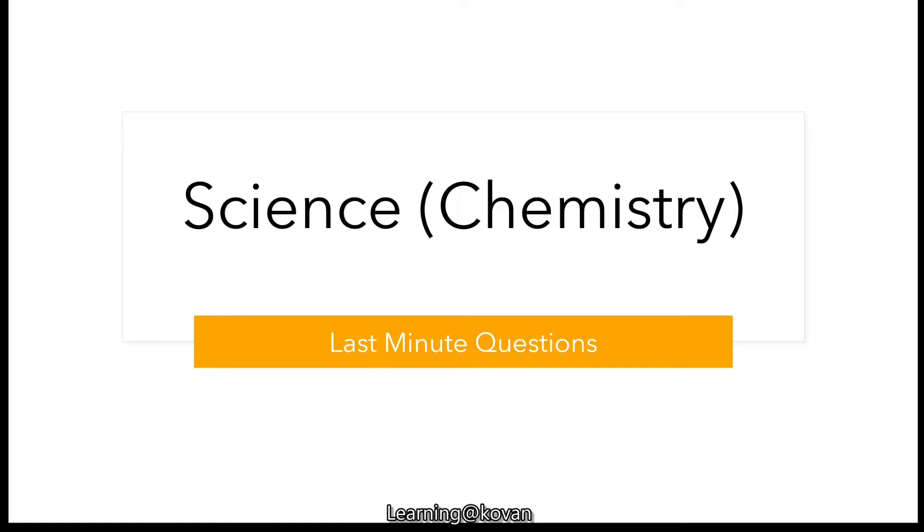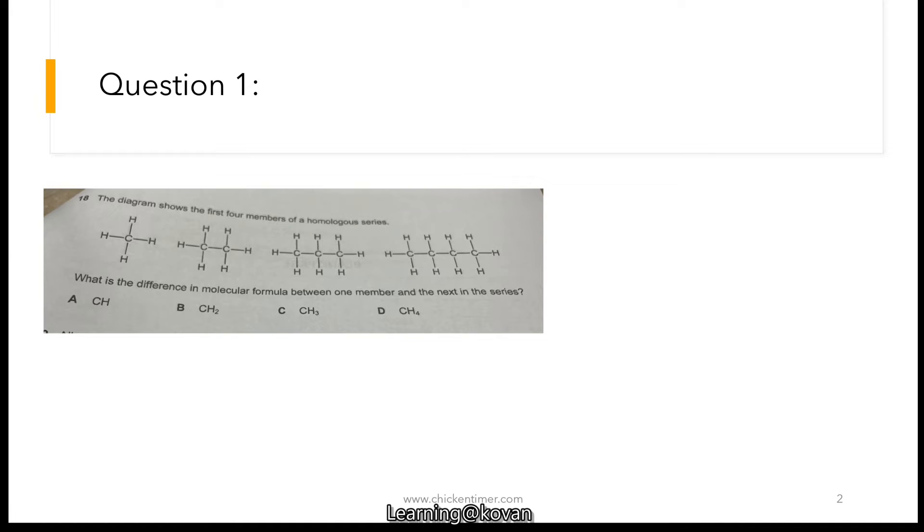Okay, these are the two questions that I'll be answering. So the first one is this question about the homologous series. There are two ways to look at this question because what you want to find out is the difference between the molecular formula between one member and the next member. So that means it's between the one carbon and two carbon, or the two carbon and the three carbon, then the three carbon and the four carbon.